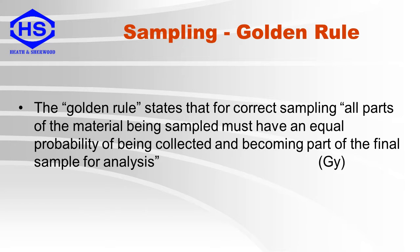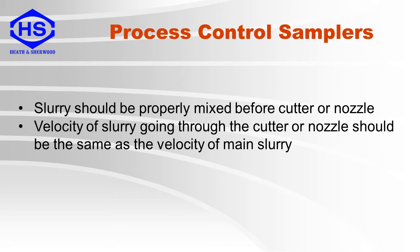It should be stressed that process control samplers do not respect the golden rule for sampling and therefore are not probabilistic. The slurry should be properly mixed or homogeneous before getting to the cutter or nozzle. The velocity of the slurry going through the cutter or nozzle should be the same as the velocity of the main slurry. However, there is no guarantee that this is really the case because of changes in the process and piping.